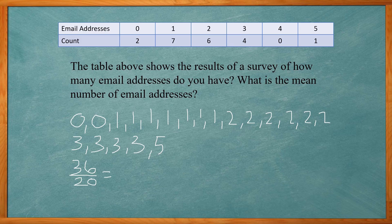And that comes out to 1.8. Now a faster way to do this would be to take 2 times 0 plus 7 times 1 plus 6 times 2.